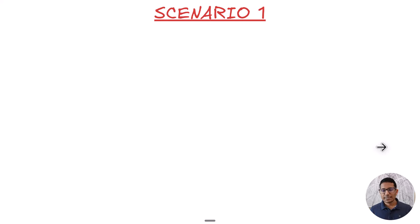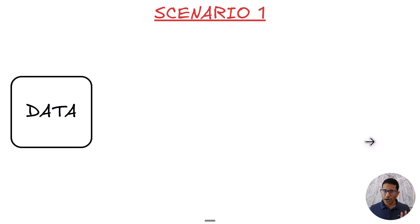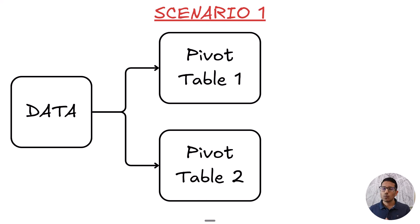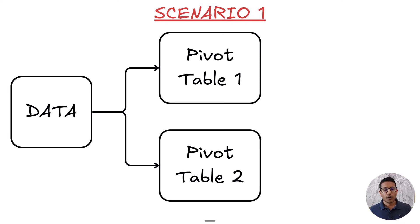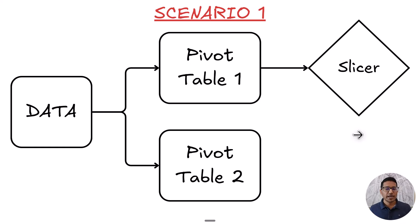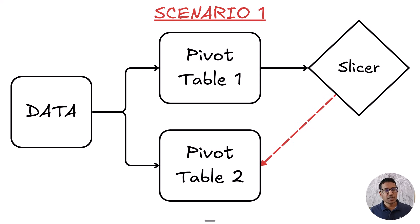There are two scenarios I am going to cover. In scenario one, I would have one data set and then create two different pivot tables with the same data set. Because these pivot tables have been created with the same data set, they share a pivot cache. If I create a slicer with pivot table one and I want this slicer to also control pivot table two, it's pretty easy because these pivot tables share the same pivot cache.